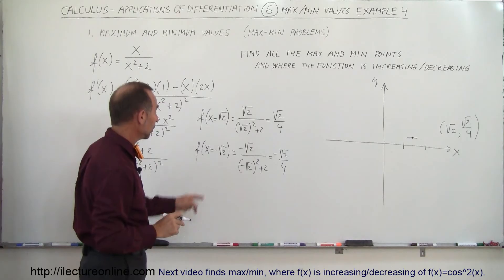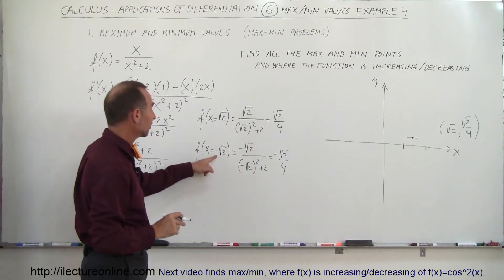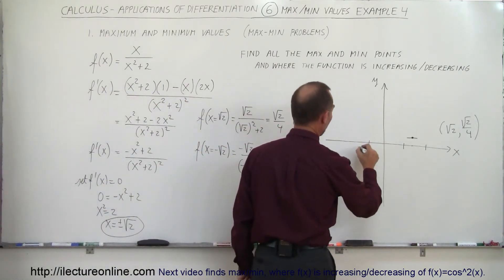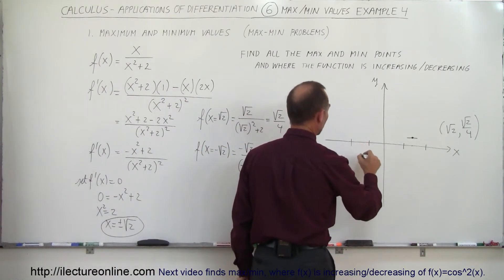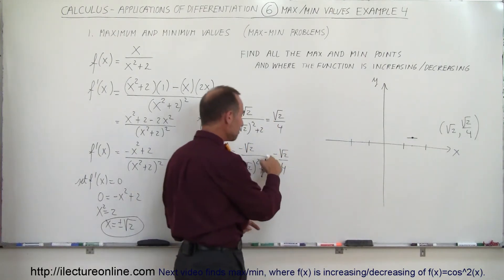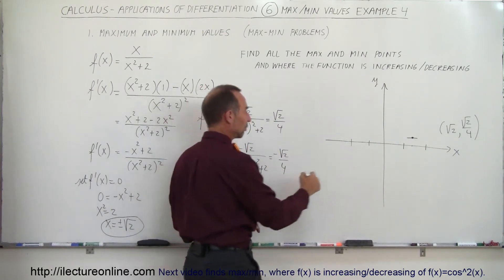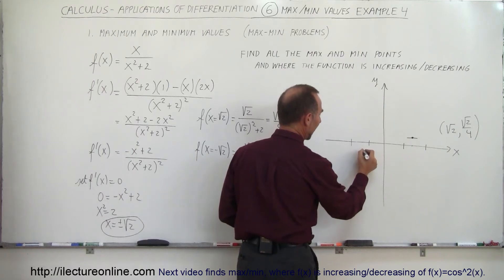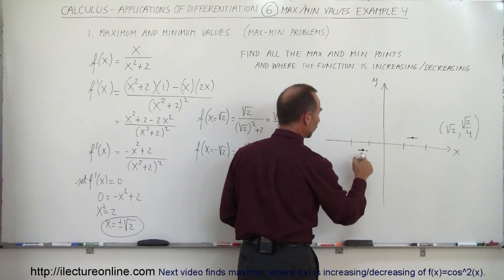The second point will be when x equals negative square root of 2 — so about minus 1.4 — with a value of minus square root of 2 over 4, which is a little bit smaller than negative one half. The slope there will be 0 as well.